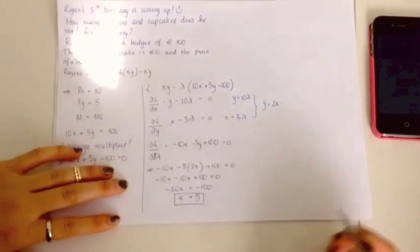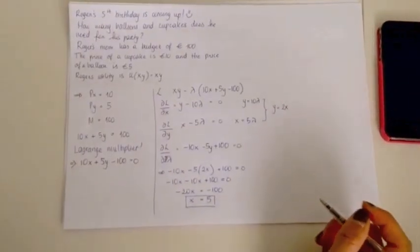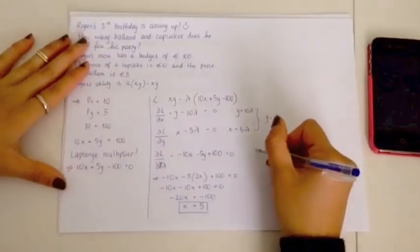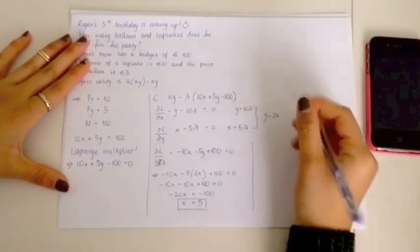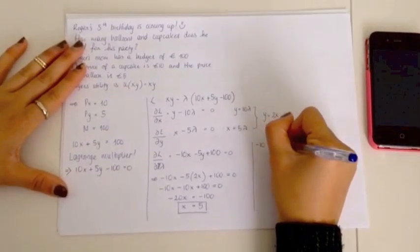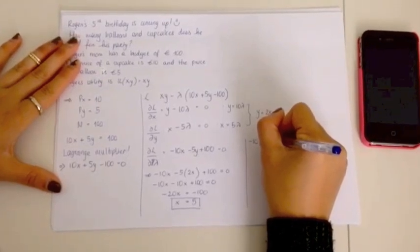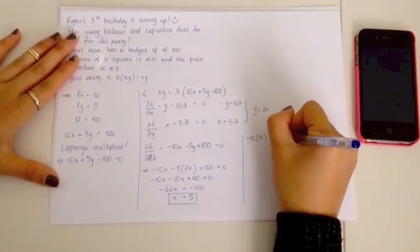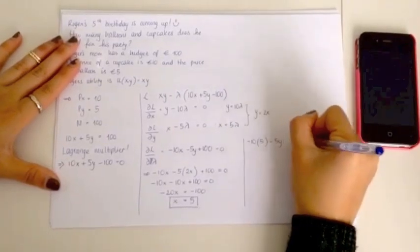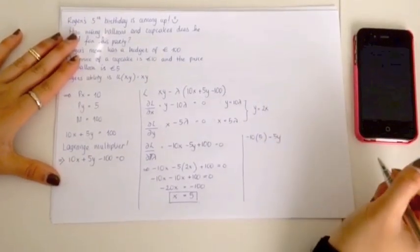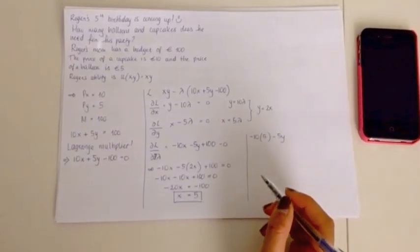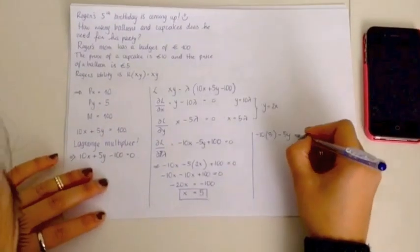So, there we have the first half of our optimal bundle, X equals 5. And then, if we plug that back into our original budget constraint, 10X plus 5Y equals 100. And we get 10 times 5 plus 5Y equals 100. Minus 10 times 5 minus 5Y plus 100 equals 0.